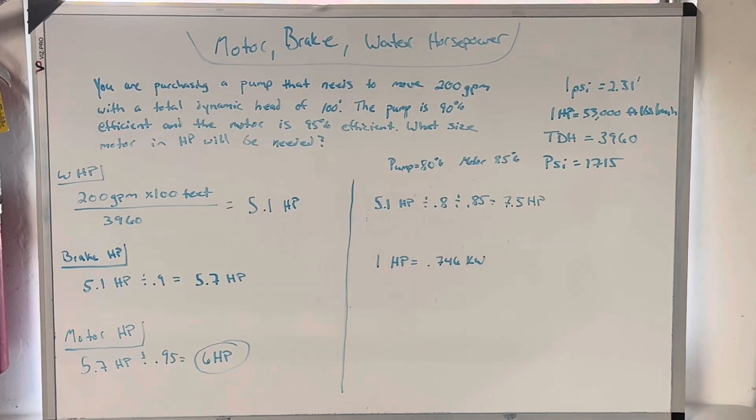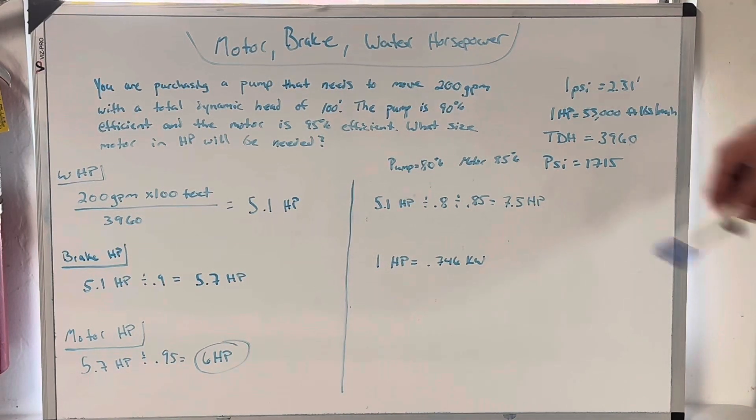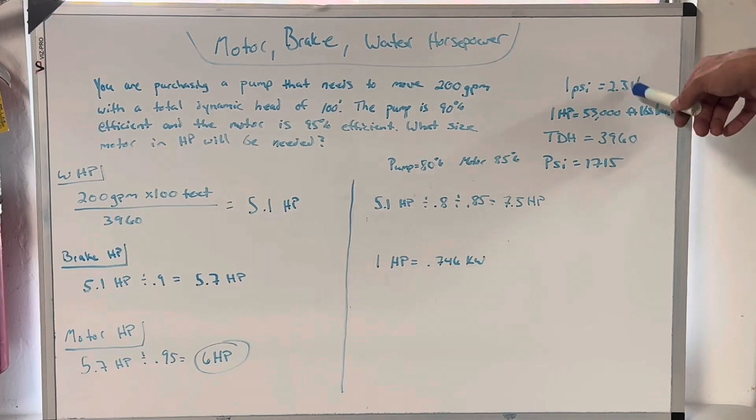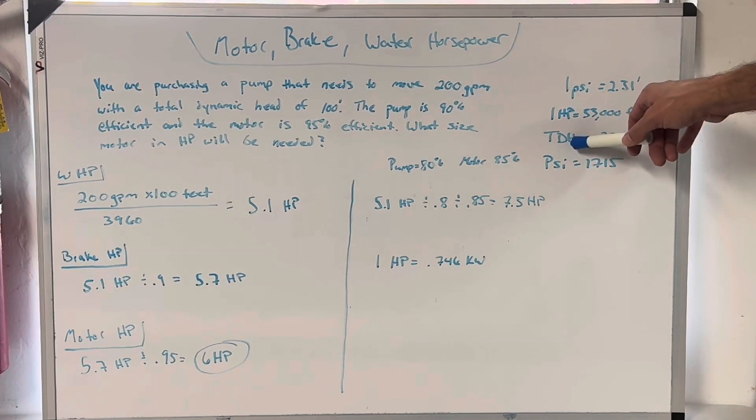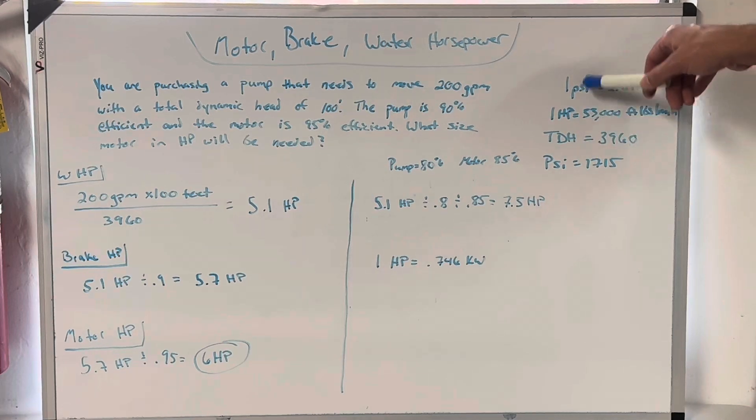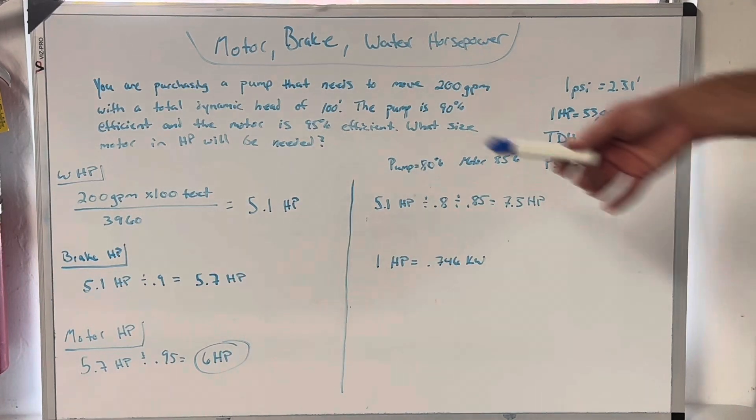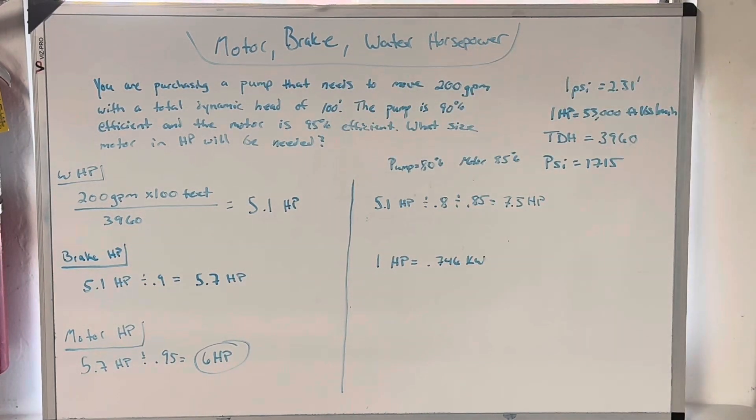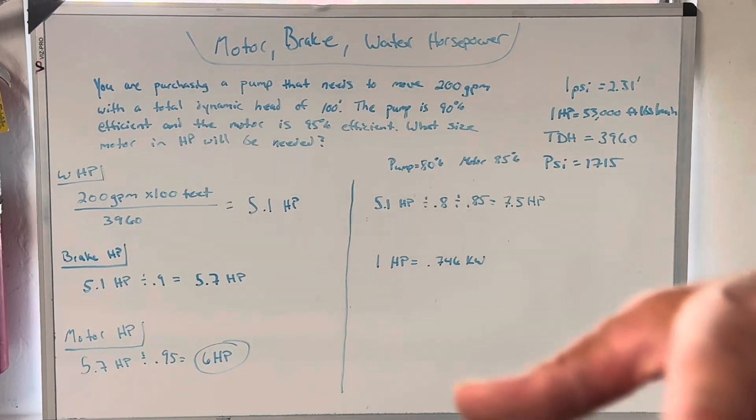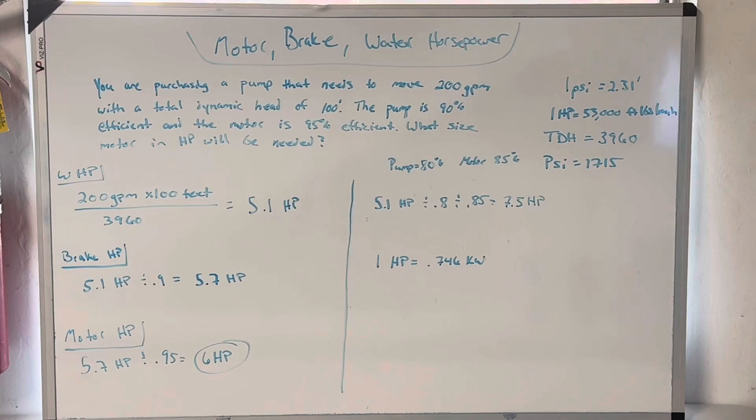If you're given PSI instead of head and you're given a flow and PSI, 1715 is that number. And that comes from 3960 divided by 2.31 feet per one PSI. So total dynamic head is in feet. And so that would be 3960 divided by 2.31 is 1715. So I'm giving it to you in total dynamic head. If it's given to you in PSI, you use 1715 instead of 3960. Any questions about that comment, please.